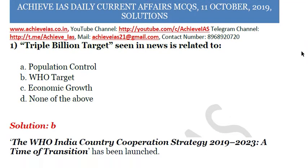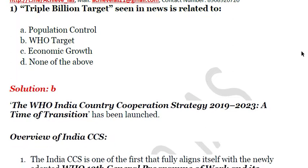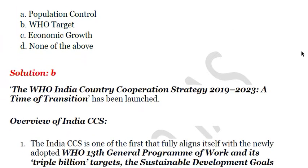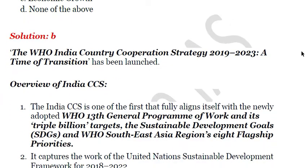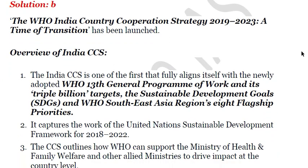Recently the WHO India Country Cooperation Strategy 2019–23 was released. It is a strategy adopted under WHO's 13th General Programme of Work and its Triple Billion Targets, along with the Sustainable Development Goals and the WHO Southeast Asia Region's eight flagship priorities.